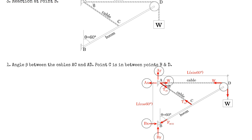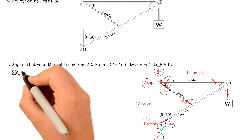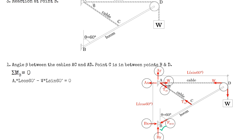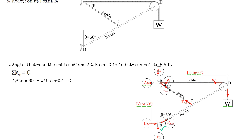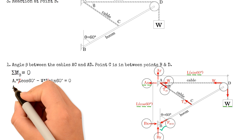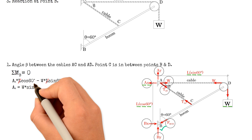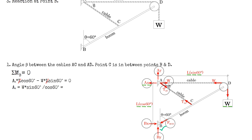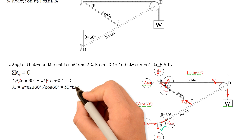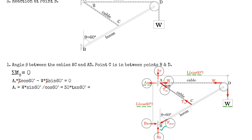And the force acting on the boom, force BCD. Taking the summation of moments at point B equals zero, this gives us AX multiplied by the length L times cosine of 60 degrees, minus the weight W multiplied by length L times sine of 60 degrees equals zero. The length L cancels out, so AX equals W times tangent of 60 degrees, giving us 51.96 kN.